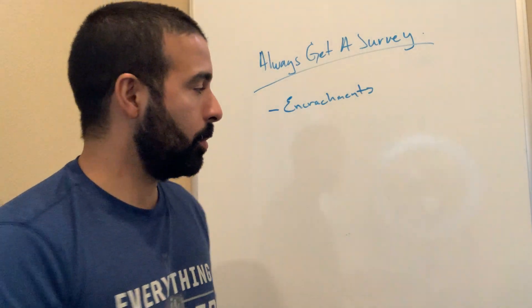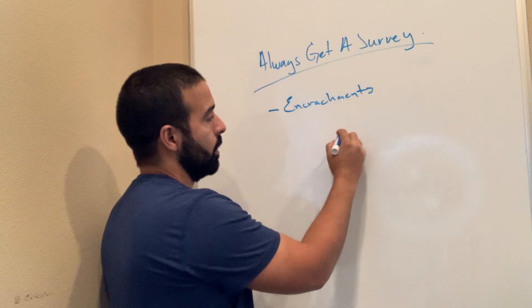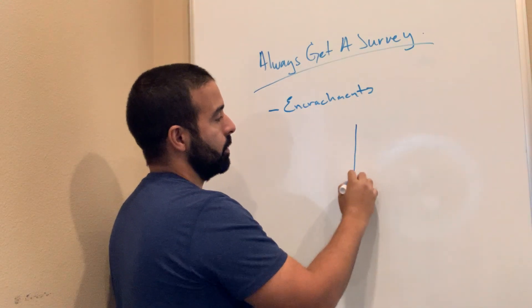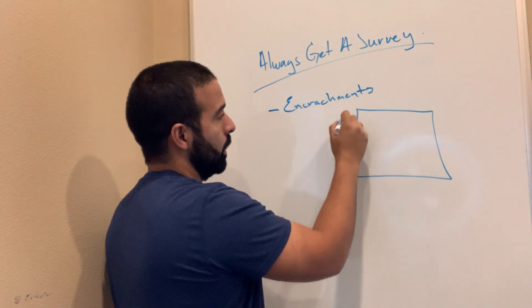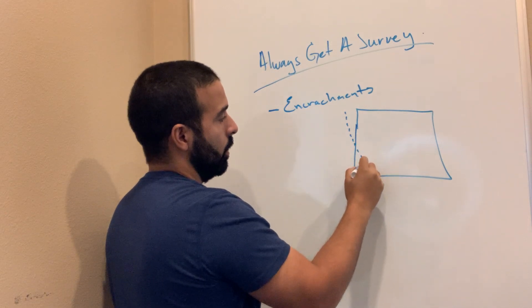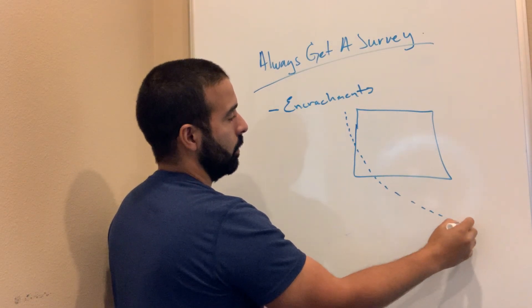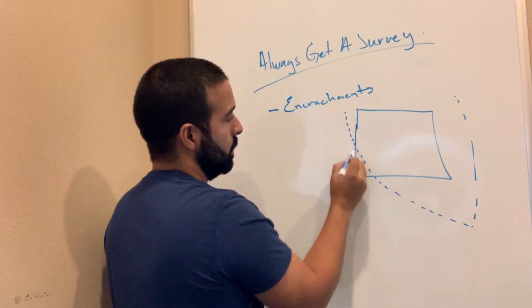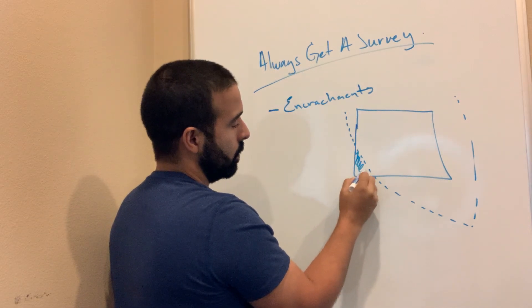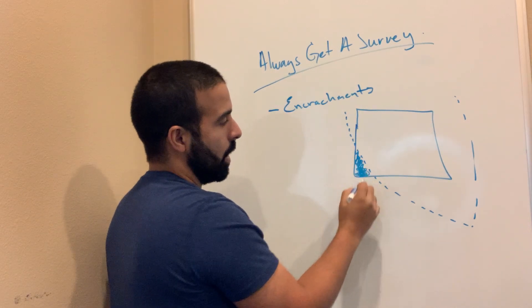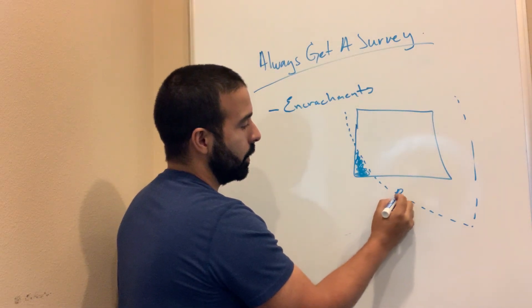Now if you don't know what an encroachment means, let's say that this is your house and the lot line passed right there, meaning this corner of the house was outside of what they call the building lot line.